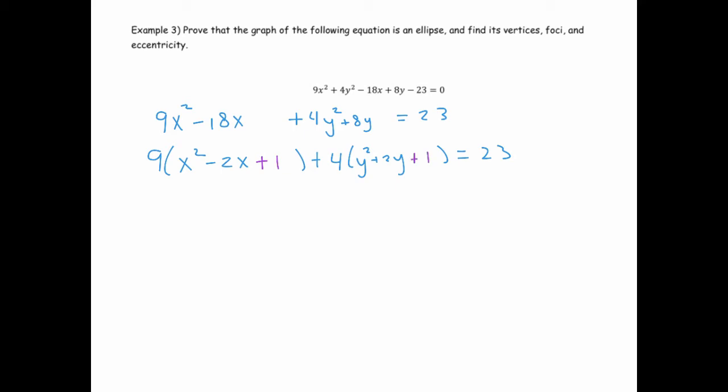Now, we've really added 1, or it looks like we added 1, but we really added 9 when we completed the square for the x term. So I need to add 9 here to balance, and we really added 4 on the other side. So now this becomes 9 times x minus 1 squared.